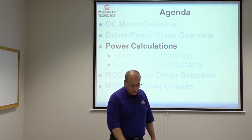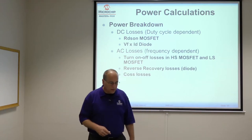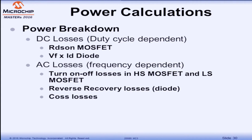Now let's start talking about how to calculate power for all the elements in the drive circuitry. We're going to break this down into two different losses: DC losses and AC losses. DC losses occur when the device is conducting during the on-time of a PWM cycle — basically the RDS_on of the MOSFET and the forward voltage drop of the diodes. AC losses, which are frequency dependent, are the turn-on and turn-off times of the MOSFET, plus reverse recovery losses in the diode and parasitic output capacitance (COSS) charging and discharging.